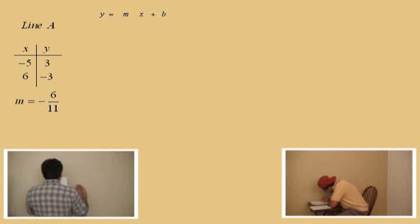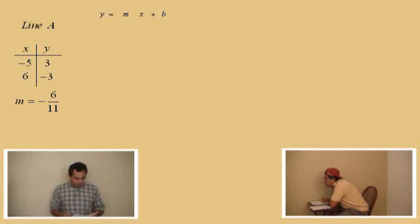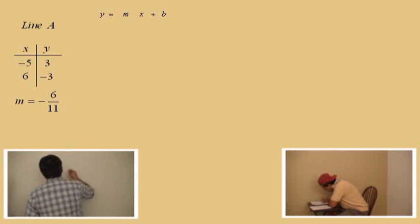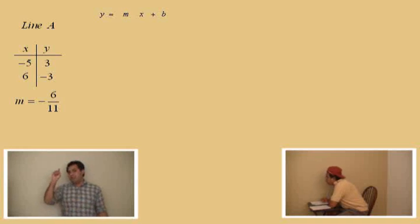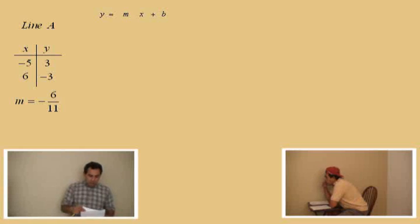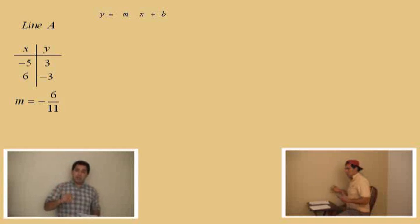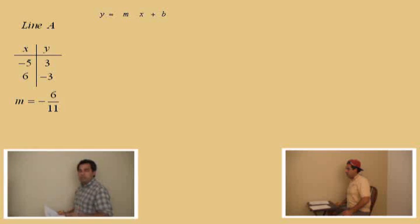Now, we did these problems in class, and what we have to do now is find the equation of this line in slope-intercept form. We have two points and a slope, but we do not have the y-intercept, so we do not have the value of b. There are two approaches: one is to use the slope-intercept formula y equals mx plus b, or we can use the point-slope formula. I'm going to do this problem with the slope-intercept formula first, and then we'll use the point-slope formula.